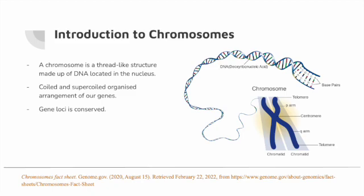A chromosome is a thread-like structure made up of DNA located in the nucleus. The DNA in a chromosome is about five centimeters long when stretched, but in the actual cell it's very tightly coiled and supercoiled into a structure as shown in the diagram. The coiling and supercoiling arranges the genes in the same way each time, which conserves the location of the genes — the gene loci — on their respective chromosomes.